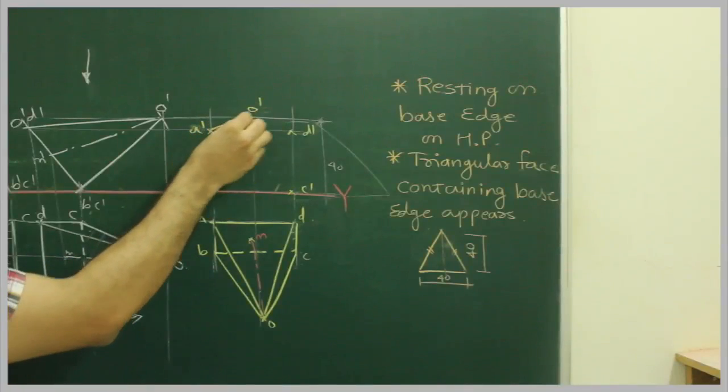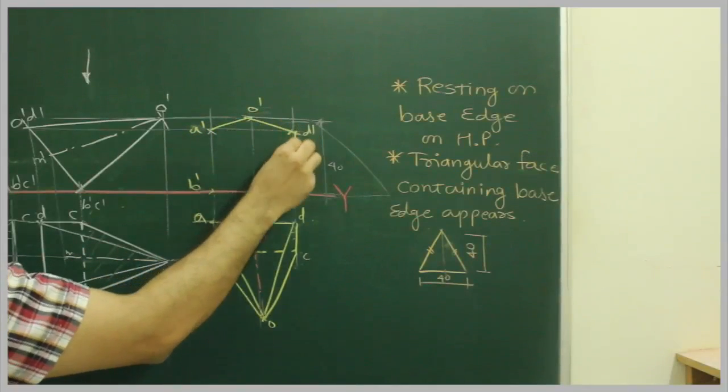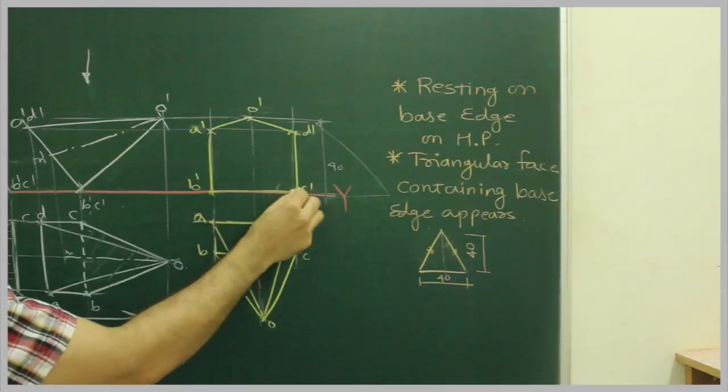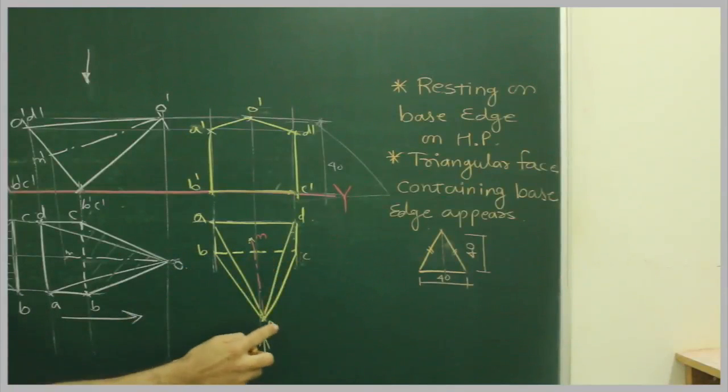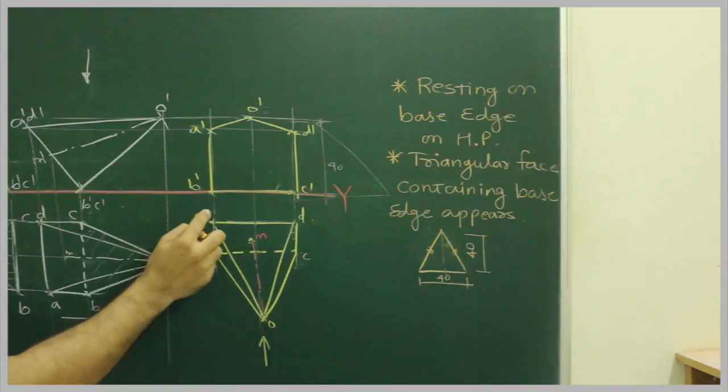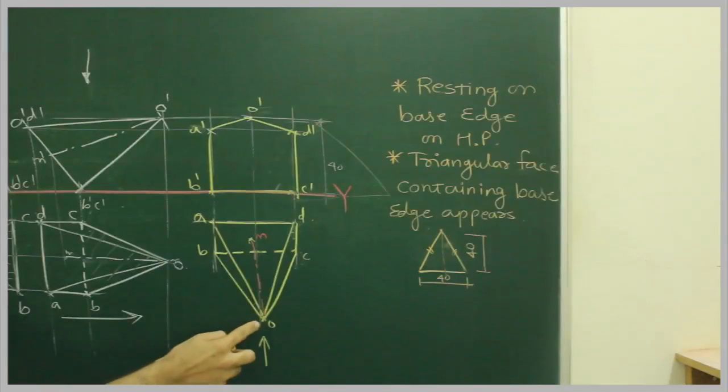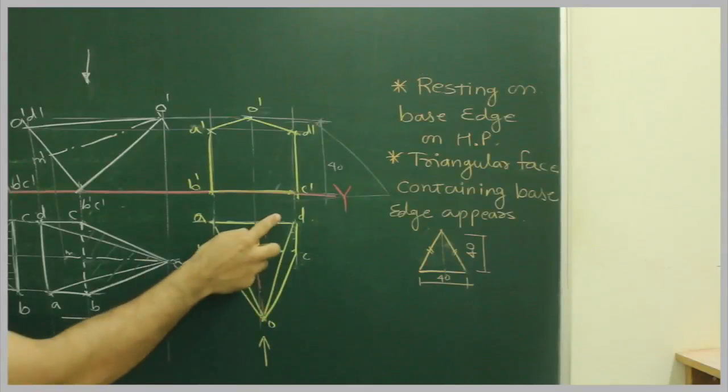Now we will draw boundary line. Now see when you see from here, which one is nearer to you. BC is nearer to you. O and AD, AD is away from you. O to B and O to C will be nearer to you compared to OA and OD.